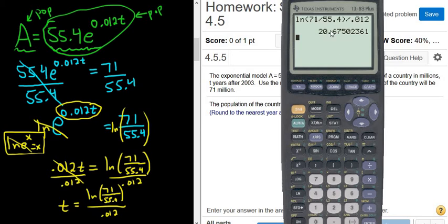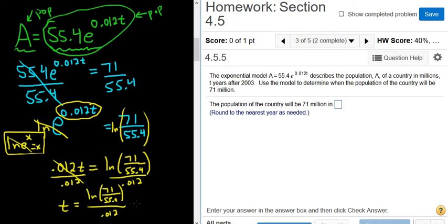It says round to the nearest year, so 21. T is 21. Is that the answer? No, I don't think so. T is 21 years.